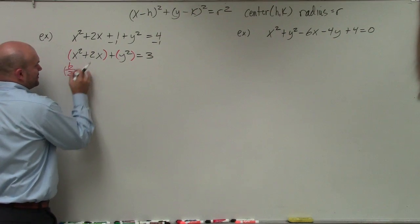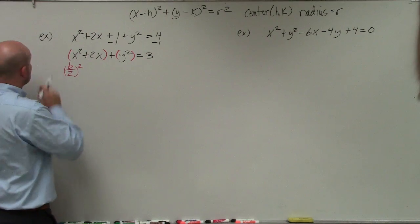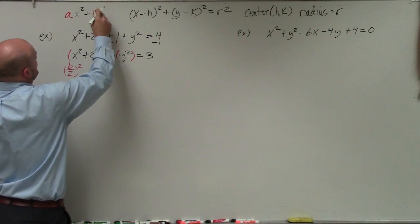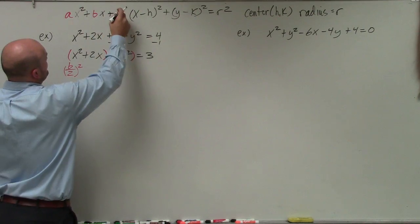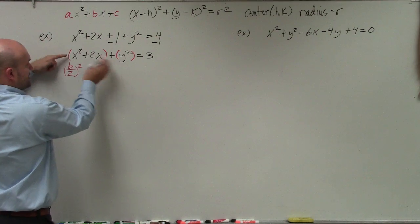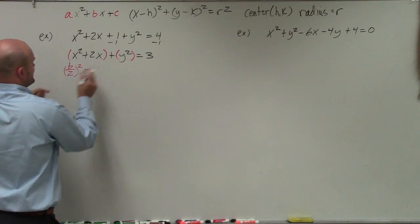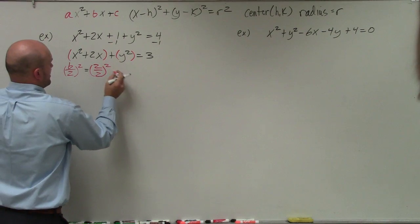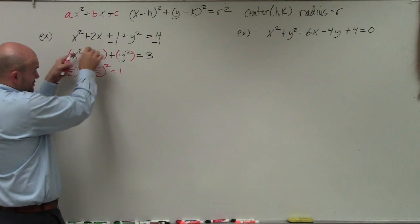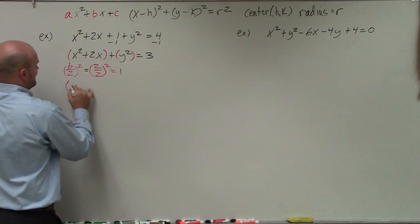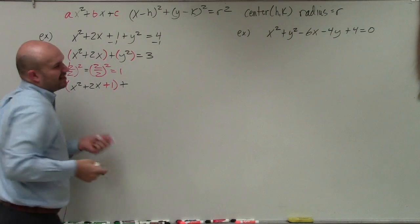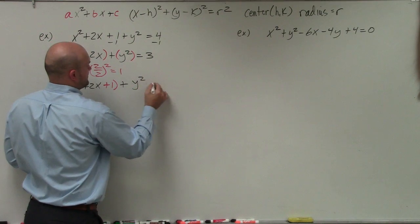To do that, we're going to take b divided by 2 and square it. If you remember, b comes from ax squared plus bx plus c, where b is your coefficient of your linear term. Looking at my second equation, notice that b is 2. So therefore, I get 2 divided by 2 squared: 2 divided by 2 is 1, 1 squared is 1. I'm going to take that 1 and insert it inside this parentheses. So now I have x squared plus 2x plus 1 plus this y squared. I don't really need the parentheses, so I'm just going to leave that out there: 1 equals 3.